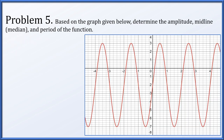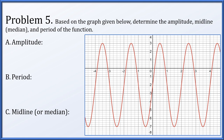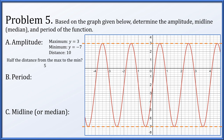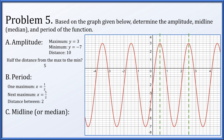For problem five, we're given a graph and we need to determine the amplitude, midline, and period of the function. To find the amplitude, we notice a maximum value of three and a minimum value of negative seven. The distance between these two is ten, so half the distance from max to min is five — that's our amplitude. For the period, one maximum appears at x equals one half, and the next maximum appears at about x = 5/2. The distance from one half to five halves is exactly two, so the period is two. Finally, to find the midline, we average the maximum and minimum values, which gives us minus two.